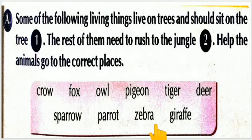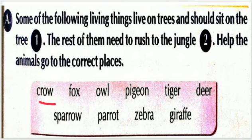Toh chalo bachcho, shuru karte hain. Pehle hai crow — toh crow kya hai? Birds. Okay, next — fox. Fox birds hai? Nahi, voh ek animal hai, okay, toh voh nahi aayega. Next — owl. Toh owl kya hai? Birds.